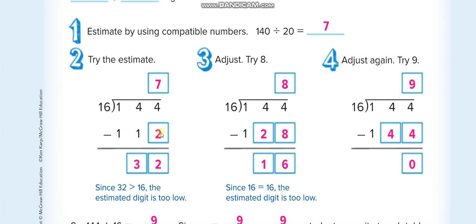When we divide, let's try 7 first. We get 112 and the remainder is 32. If the remainder is bigger than the divisor, it means you solved it wrong, so you have to try another number. Then we try 8 because of our estimate, 16 times 8 is 128, still 16.